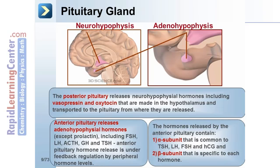The hormones released by the anterior pituitary contain an alpha subunit that is common to TSH, LH, FSH, and HCG, and a beta subunit that is specific to each hormone. The pulsatile release of hypothalamic, pituitary, and target organ hormones plays an important role in endocrine function.